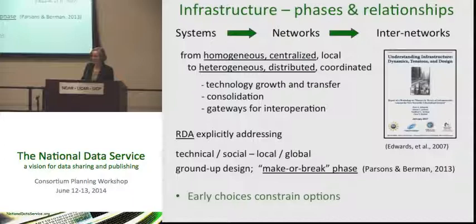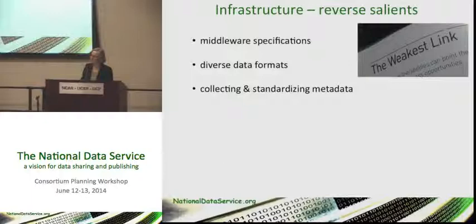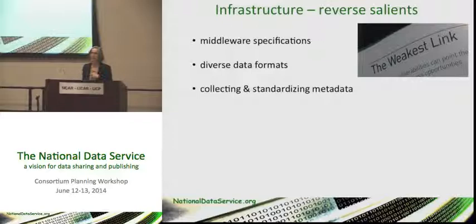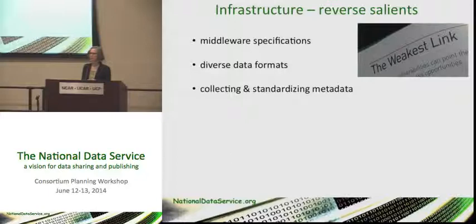The other important thing in this report is the idea that your early choices constrain your options. So while all of you made choices in your systems, we're making choices again when we're putting them back together. Understanding infrastructure has this concept of reverse salience — it's a military term. The troops are marching forward and there's something holding it back. The things identified as most common reverse salience or weakest links in this growing network of systems are things like middleware specifications, diverse data formats, and collecting and standardizing metadata.